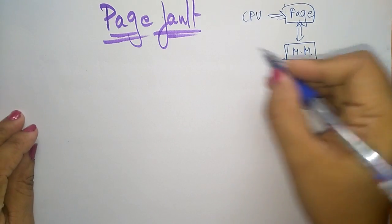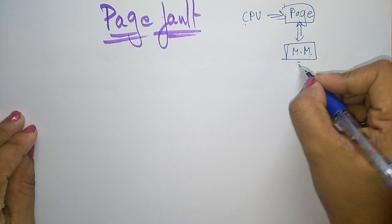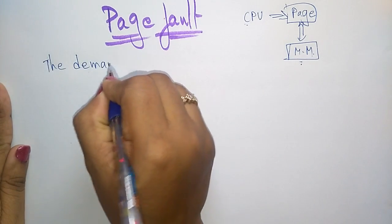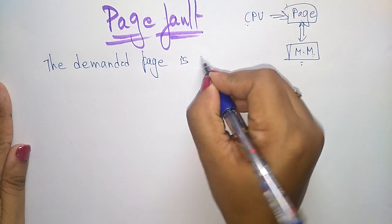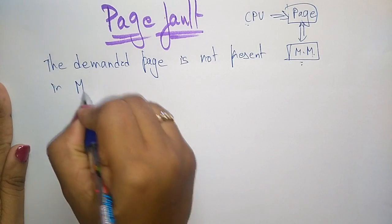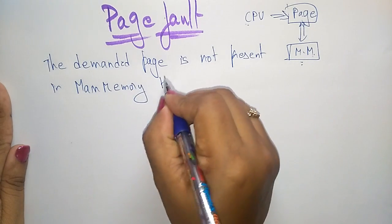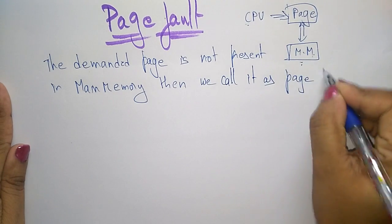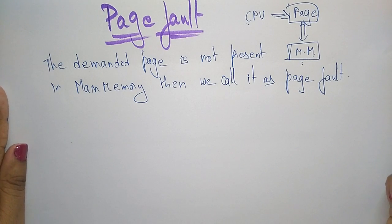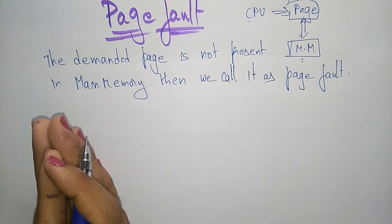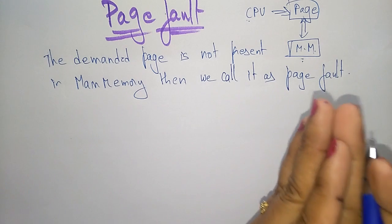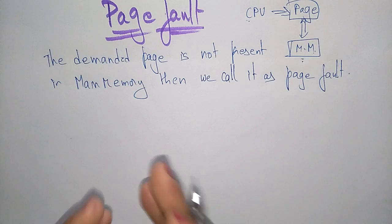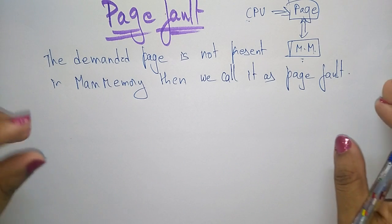So if the page that the CPU is demanding is not present in the main memory, that is called a page fault. The demanded page is not present in main memory. Also, if pages that are present in main memory are swapped out, and the CPU requests a page that has already been swapped out and is no longer present in main memory, that concept is also called a page fault.